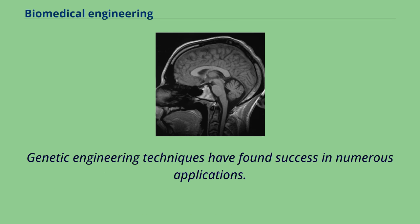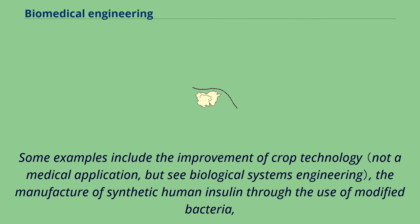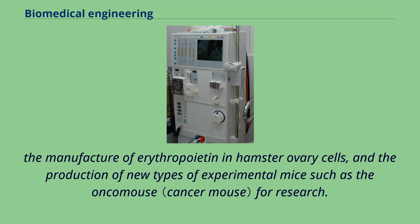Genetic engineering techniques have found success in numerous applications. Some examples include the improvement of crop technology, the manufacture of synthetic human insulin through the use of modified bacteria, the manufacture of erythropoietin in hamster ovary cells, and the production of new types of experimental mice such as the oncomouse for research.